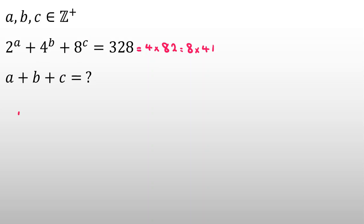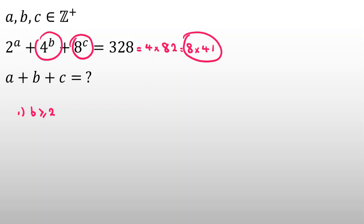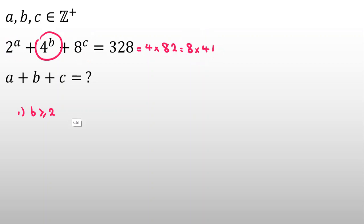Let's consider Case 1: if B is greater than or equal to 2, then 4 to the B is a multiple of 8. Since all other terms are multiples of 8, 2 to the A must also be a multiple of 8. So A will be at least 3.